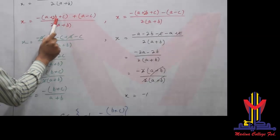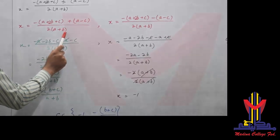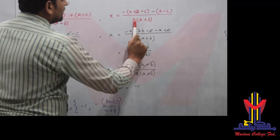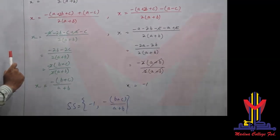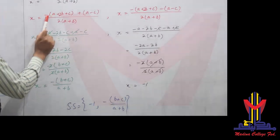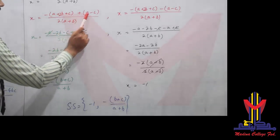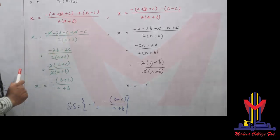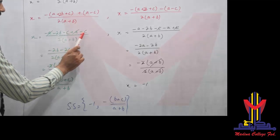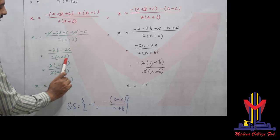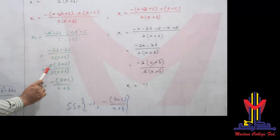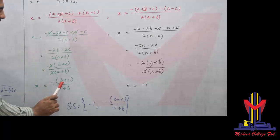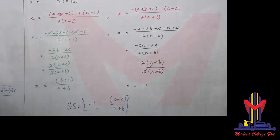For the first root (plus case): x = [-(A+2B+C) + (A-C)] / [2(A+B)]. Multiplying out the minus: (-A - 2B - C + A - C) / [2(A+B)]. The -A and +A cancel, leaving (-2B - 2C) / [2(A+B)]. Taking -2 common: x = -(B+C)/(A+B).